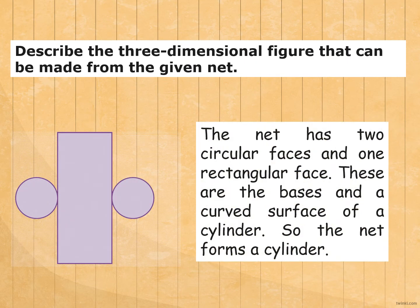The net has two circular faces and one rectangular face. These are the bases and a curved surface of a cylinder. The net forms a cylinder.